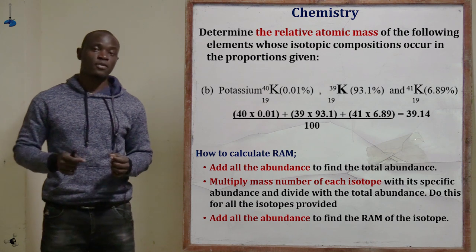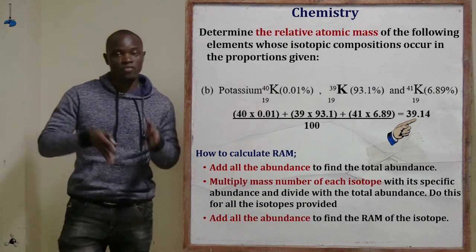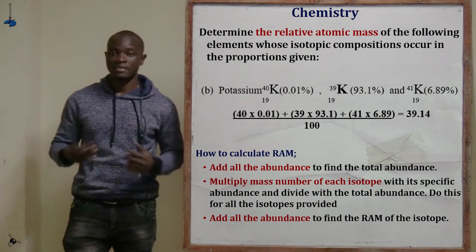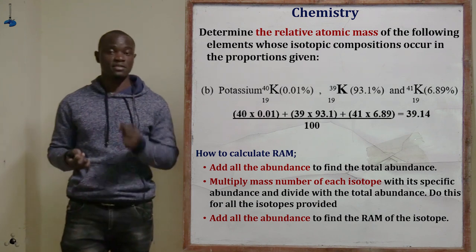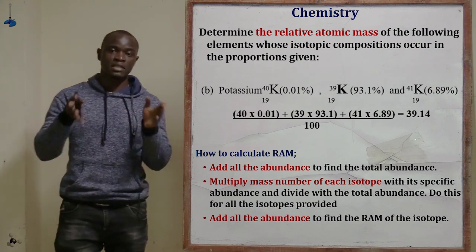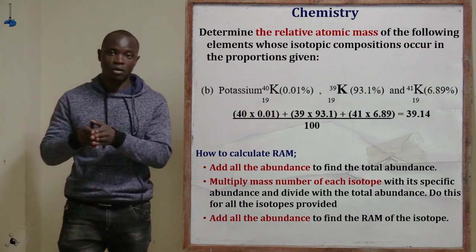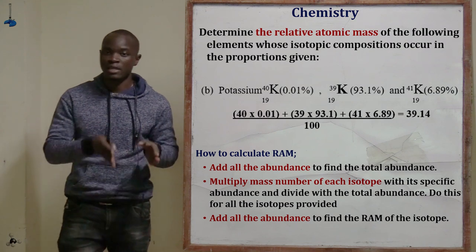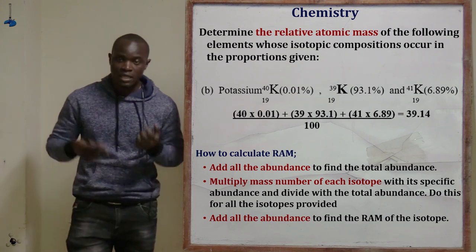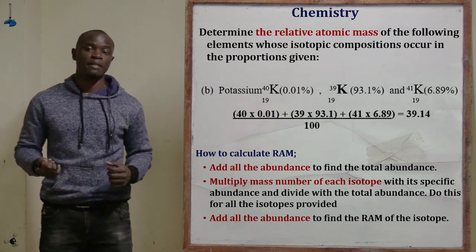So 39.14 is the relative atomic mass of potassium. To calculate relative atomic mass, simply take the mass number of each isotope times its abundance divided by 100, then add all results together. That is how simple it is to calculate the relative atomic mass of different elements.